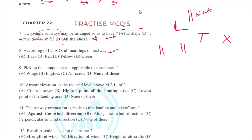According to ICAO, all markings on the taxiway are yellow, just like the apron. The taxiway is yellow in color whereas the runway is white in color.